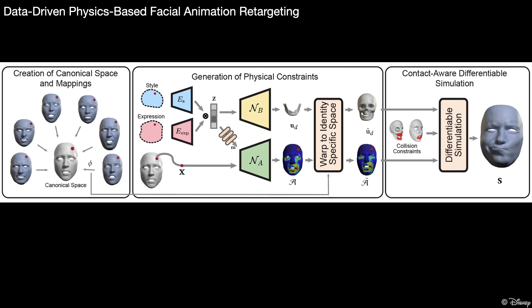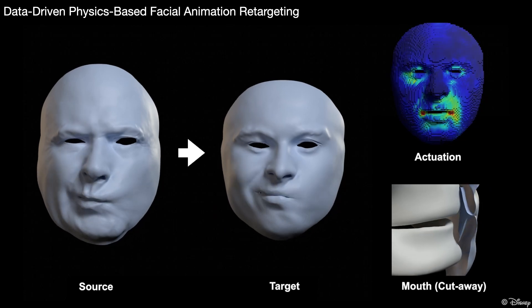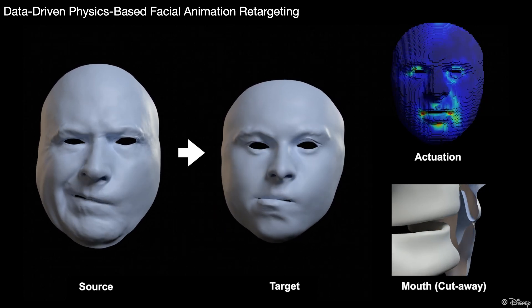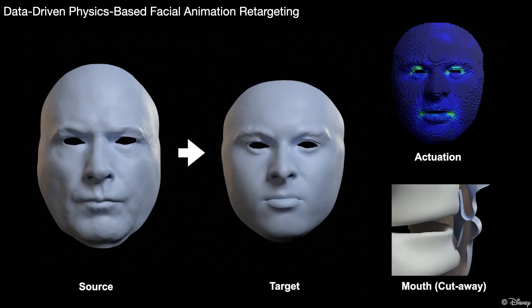Our framework can support various applications, one of them being retargeting. This can be achieved by injecting the target identity style code and source expression blend weights, yielding the final retargeted result. Here is the retargeting result. On the right, we illustrate the actuation tensor predicted by the network and show a colorway of the mouth region to highlight the collision handling.